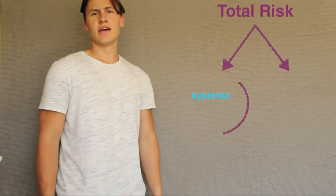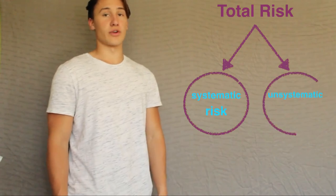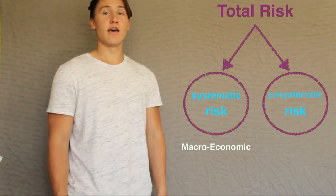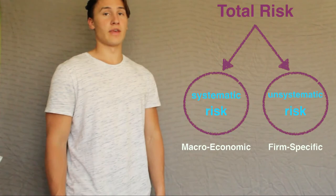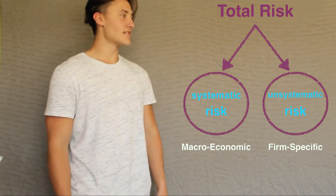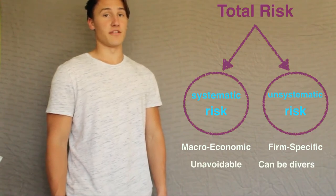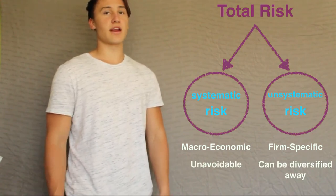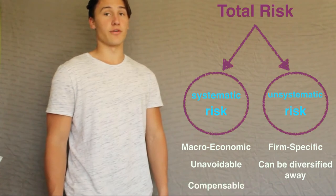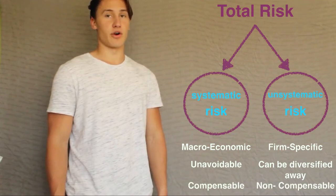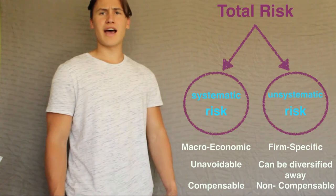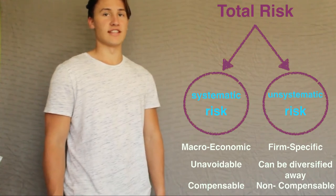Recall that the total risk of an asset can be broken into systematic and unsystematic risk. Systematic risk affects the whole market, or a large number of securities, which means it cannot be diversified away, even by holding a portfolio of assets with low correlation. Systematic risk is unavoidable, and so investors expect to be compensated for it. Thus, the systematic risk of an asset impacts its required return, which is reflected in its market price.